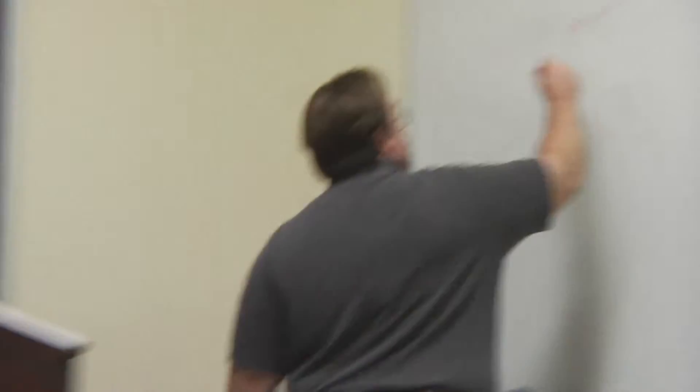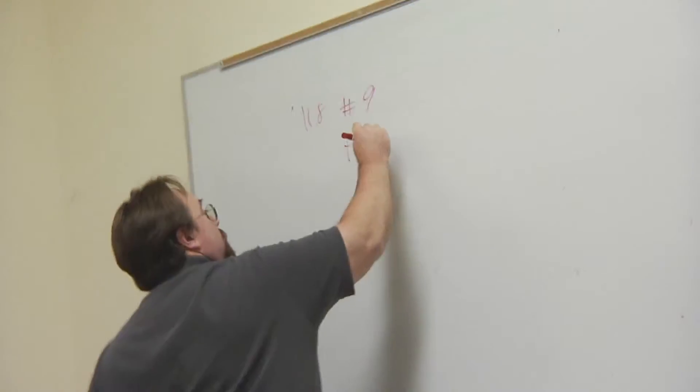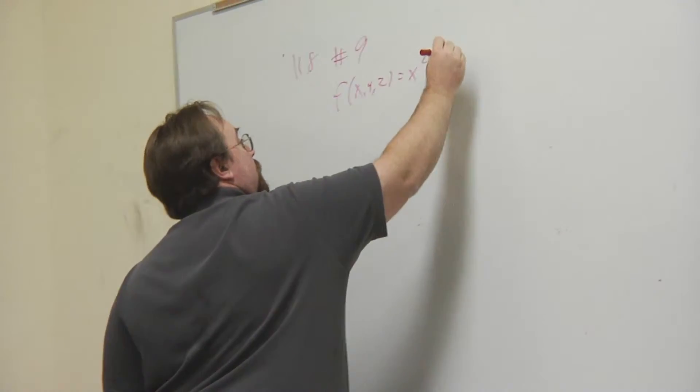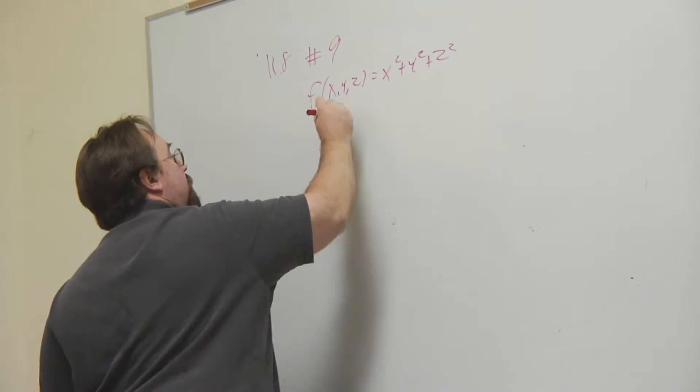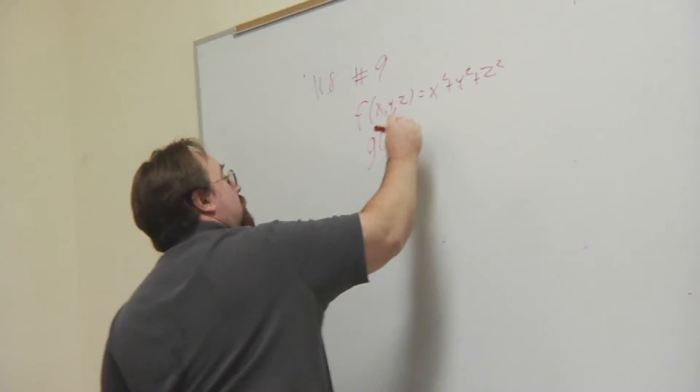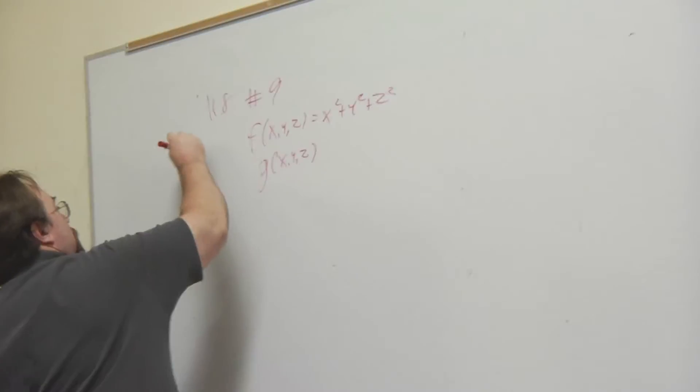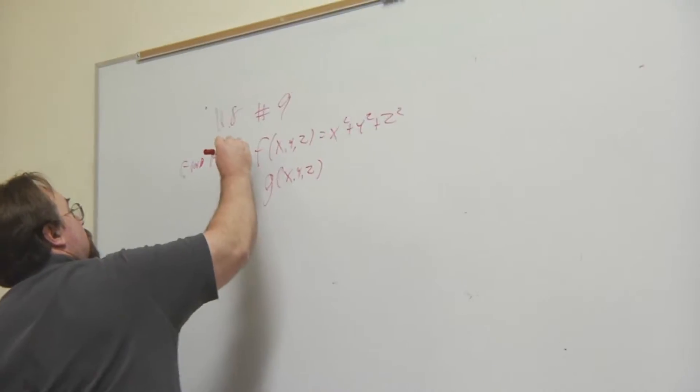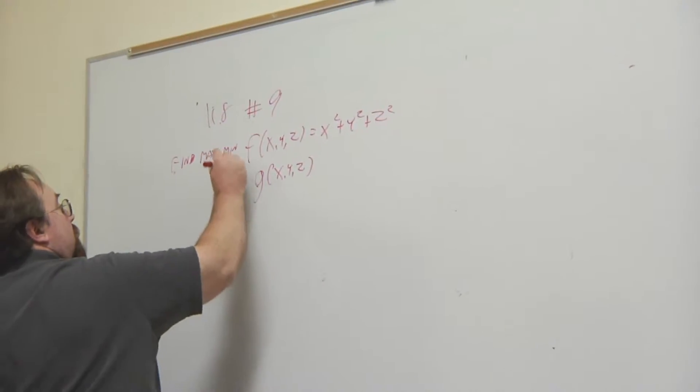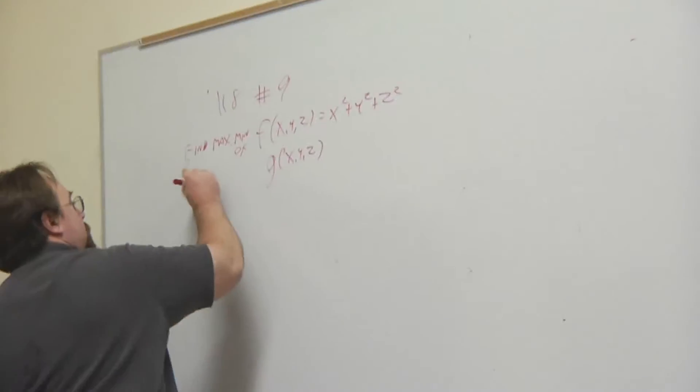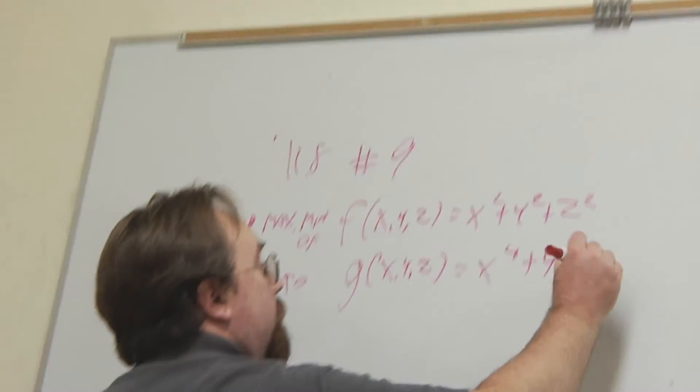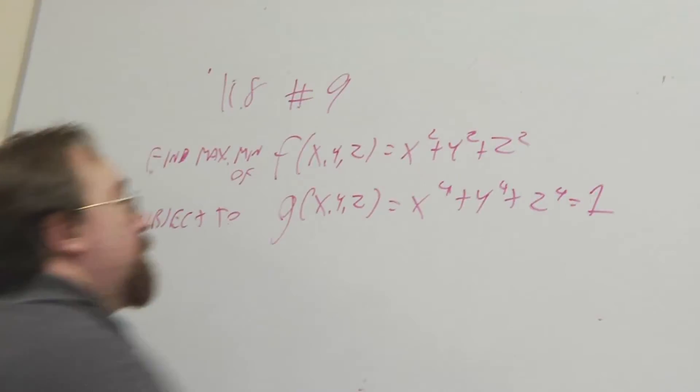So, your function is z is x squared plus y squared plus z squared and your constraint. You have to find the max min of this subject to this constraint, x to the fourth plus y to the fourth plus z to the fourth must be equal to one.